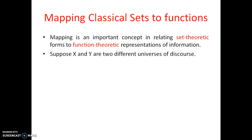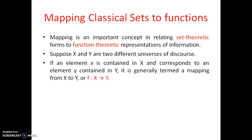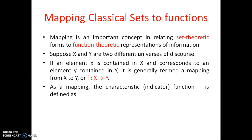Let us go to a simple example. If there are two universes of discourse — one is capital X and the second is capital Y — and an element in capital X corresponds to an element in capital Y, maybe that element is small y in capital Y, then it will be shown as the mapping from capital X to capital Y, or f: X → Y. This is the representation of mappings to functions.